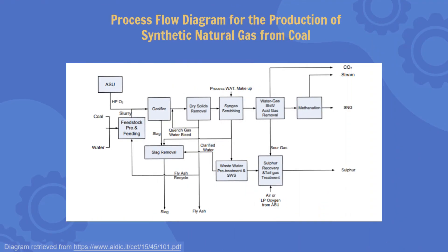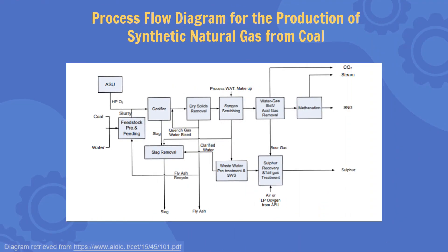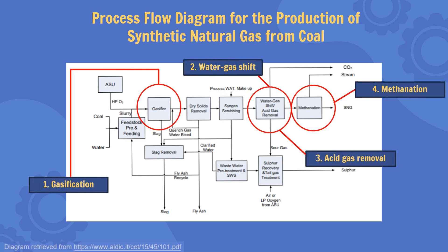The figure below shows the process flow diagram for the production of SNG from coal. We will explain in detail about the four main processes that are highlighted.